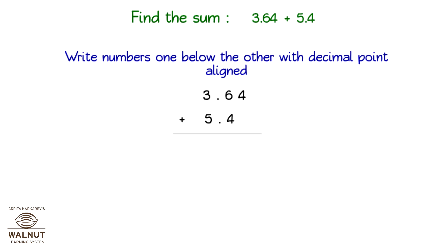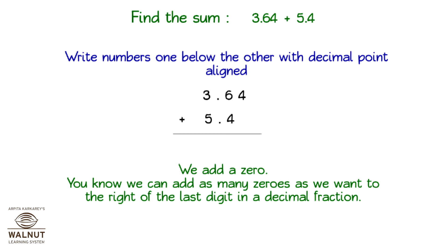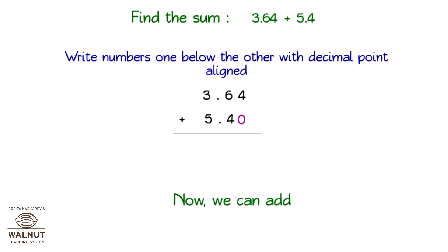3.64 plus 5.4 — there is no digit in the second decimal fraction to add to 4. What do we do in such a case? We add a 0. You know we can add as many zeros as we want to the right of the last digit in a decimal fraction. So now we add: 3.64 plus 5.40 is equal to 9.04.